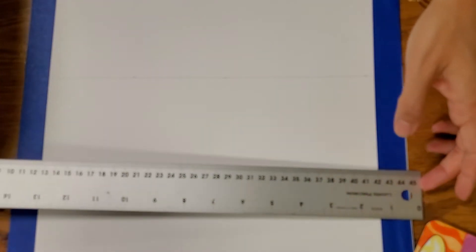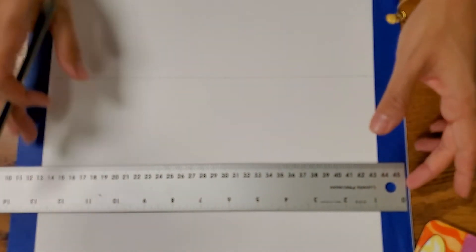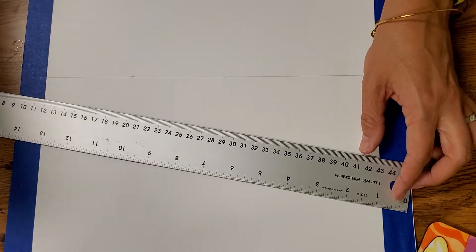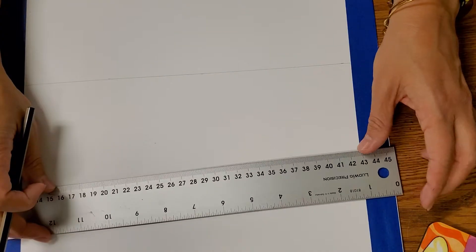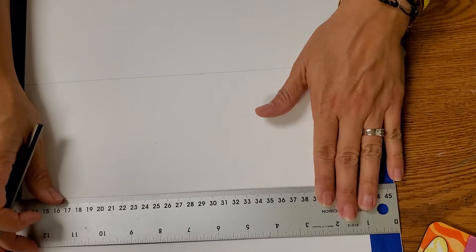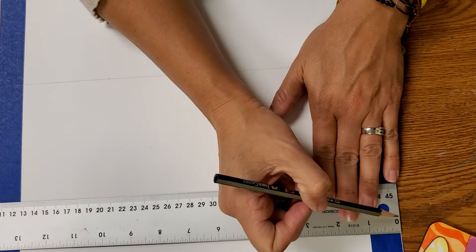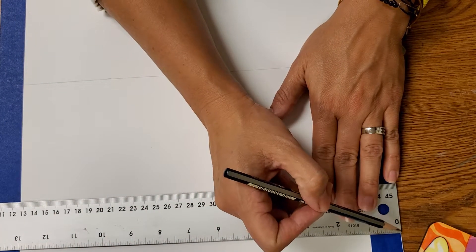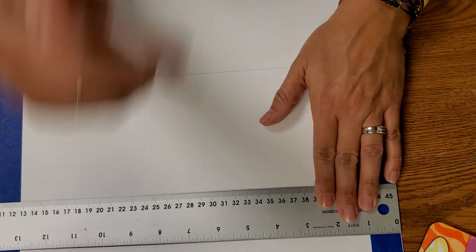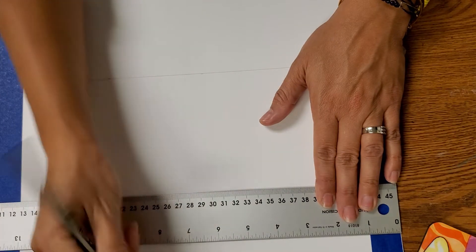Next step is turning your paper over, and now you have to get the other way. So 14 divided by 2, 7. So now you have to make a mark at every, make sure again, your ruler's from end, from the start of the zero is at the very edge. So make a mark at every 7 inch.